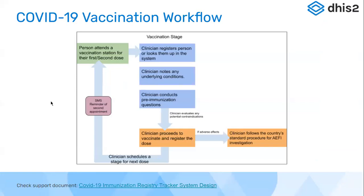The COVID-19 vaccination workflow: a patient attends a vaccination site for their first or second dose. Different countries implemented different mechanisms — some did self-registration, some did pre-registration of all eligible populations based on available in-country databases. The default workflow we'll discuss over the next four days is that a person visits a vaccination site, vaccination station, or health facility to receive their COVID-19 vaccine dose and is registered or searched for using available national identifiers.